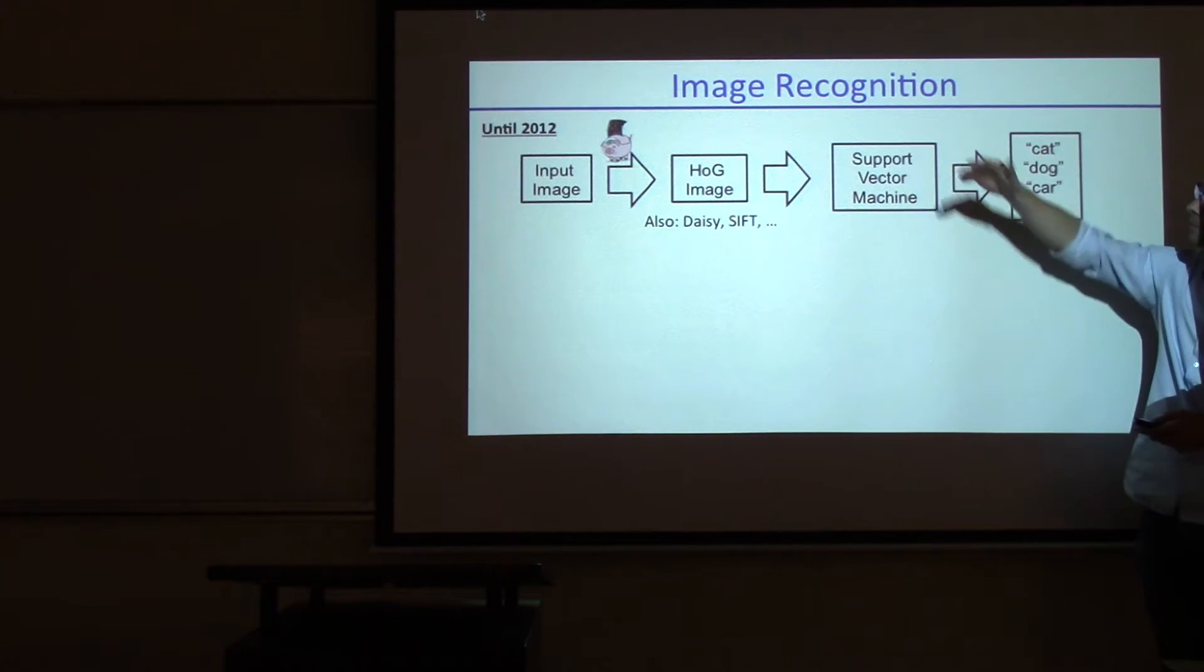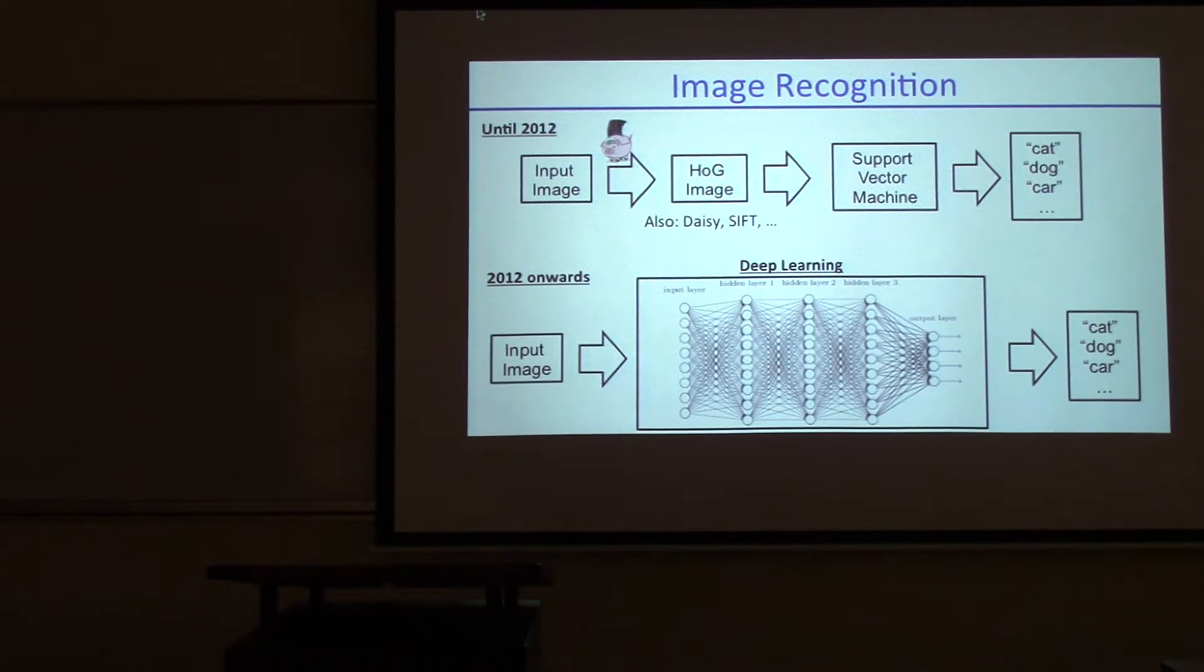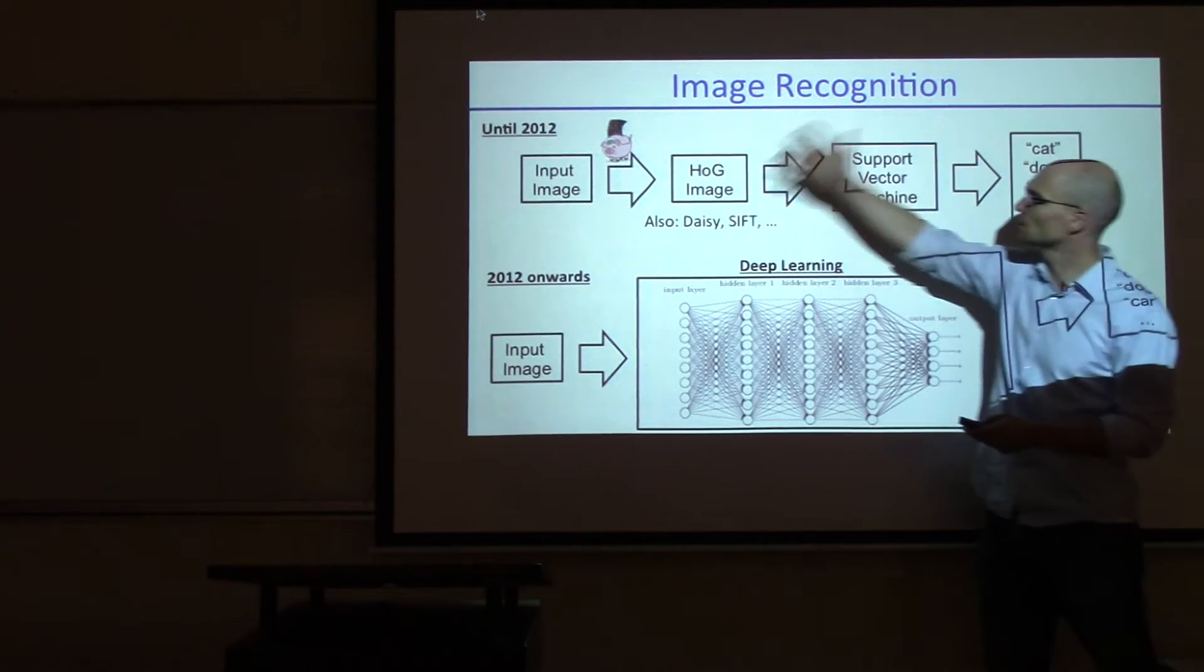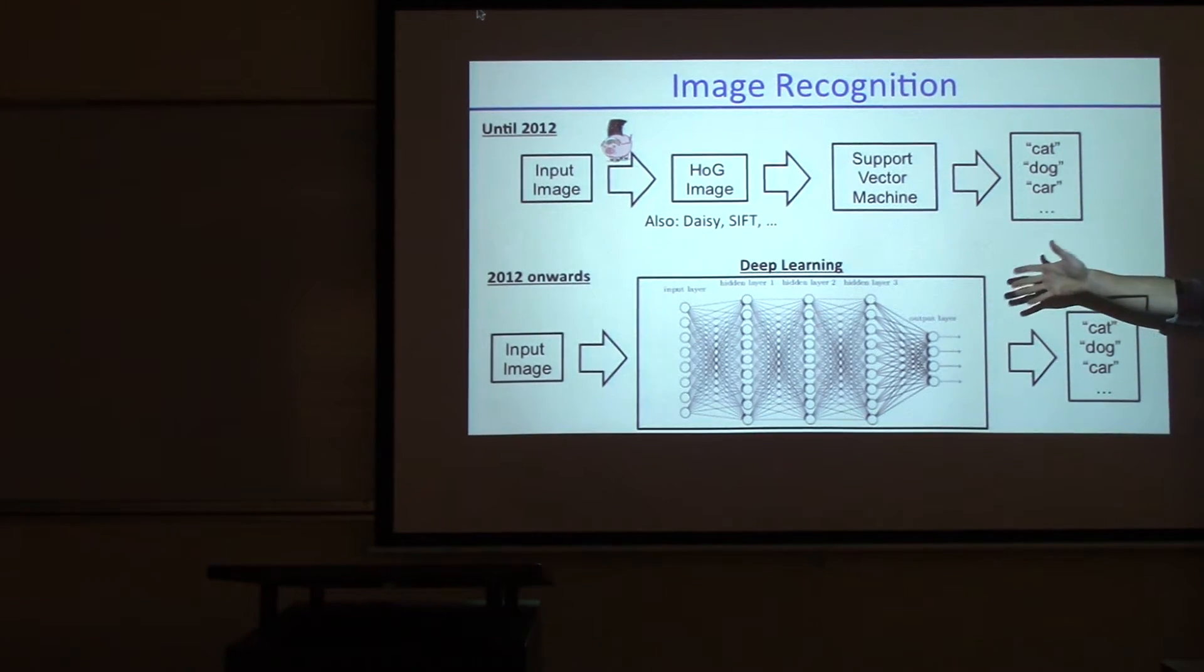We used to do computer vision like this, now it's done like that. Instead of being an expert in image formation to make progress on computer vision, which you had to be in the past, now you have to be an expert in neural net learning to make progress on computer vision.